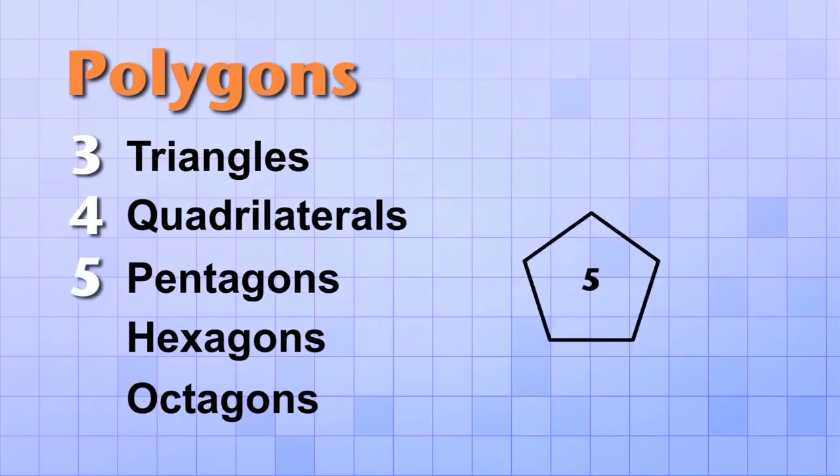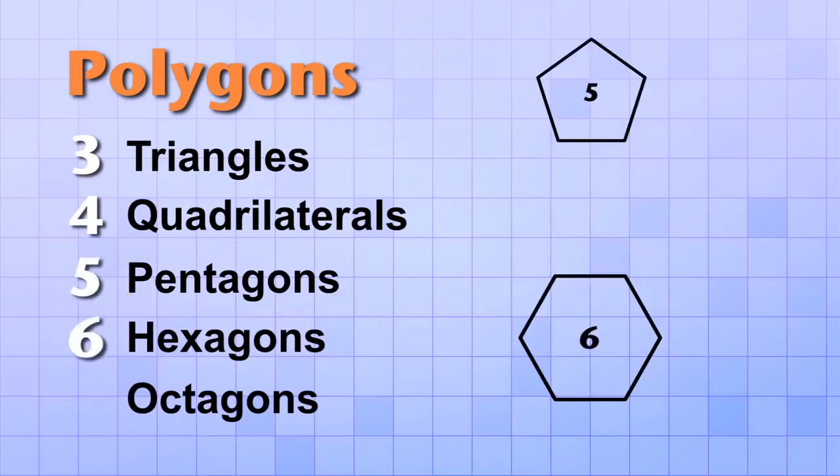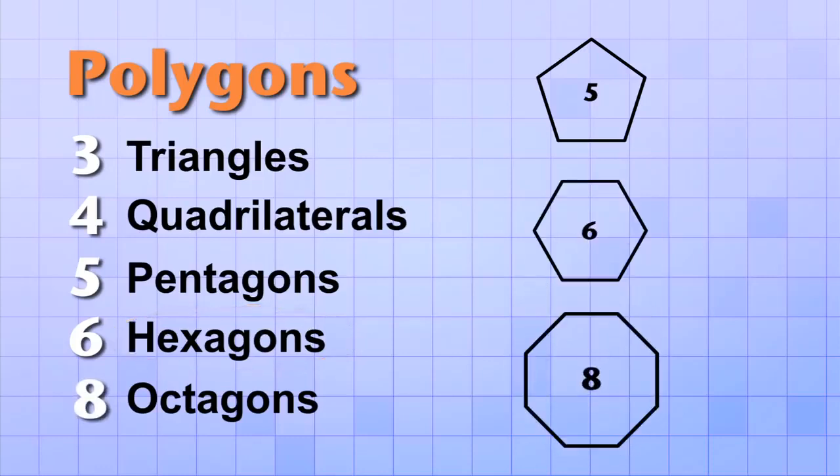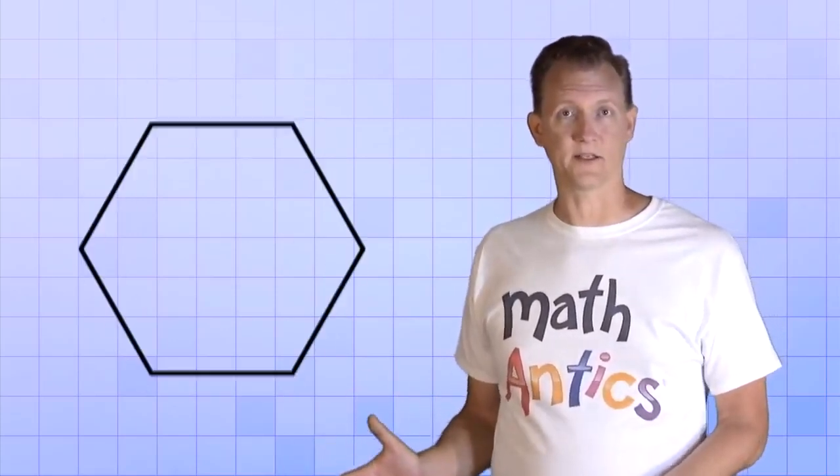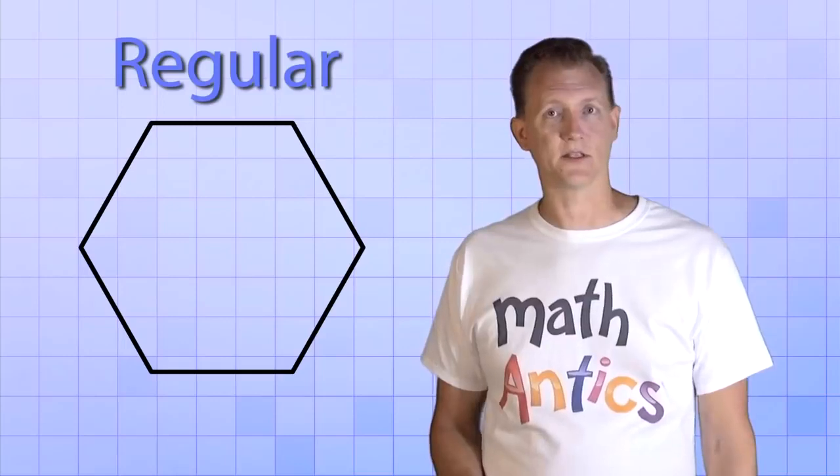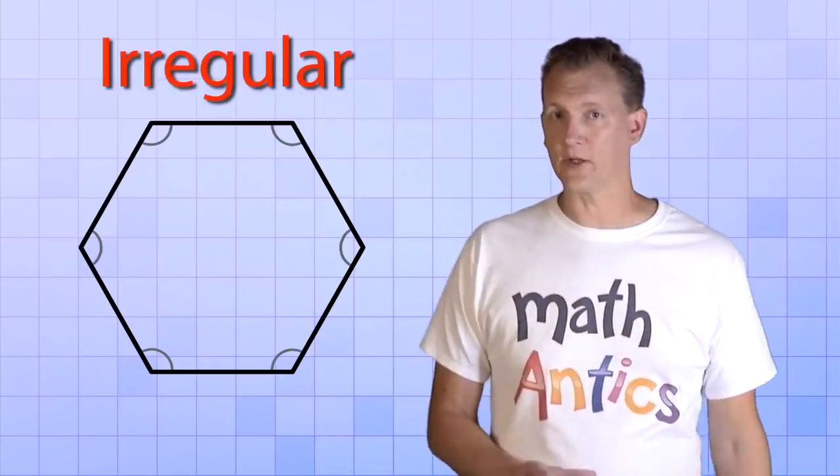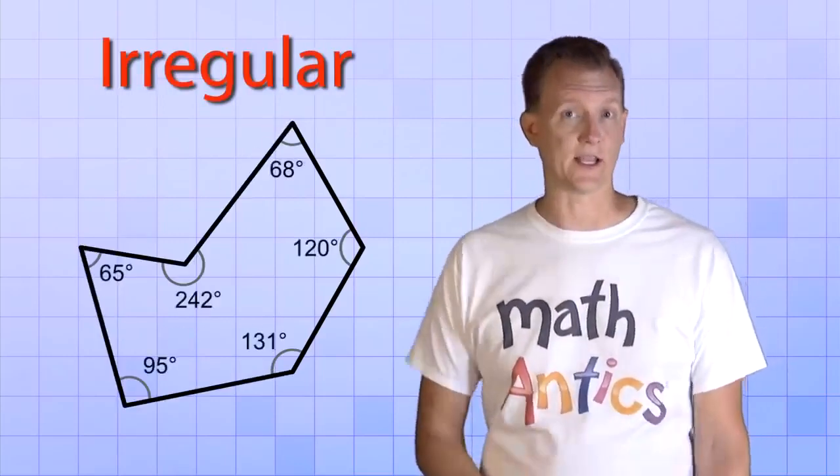Five-sided polygons are called pentagons. Six-sided polygons are called hexagons. And eight-sided polygons are called octagons. By the way, polygons that have five, six, eight, or however many sides like this are called regular polygons if all of their angles are equal, and irregular polygons if their angles are not equal.